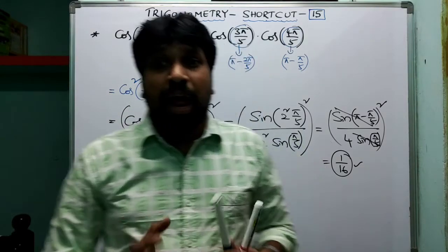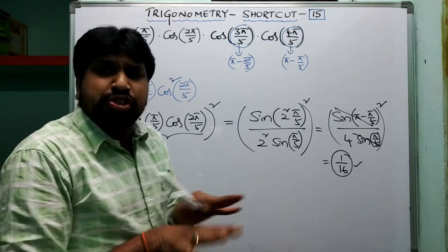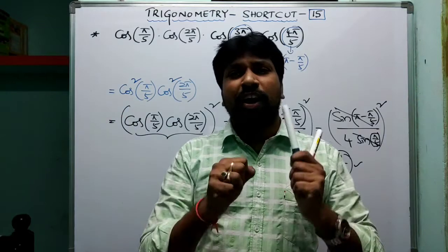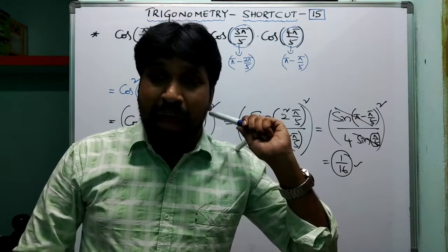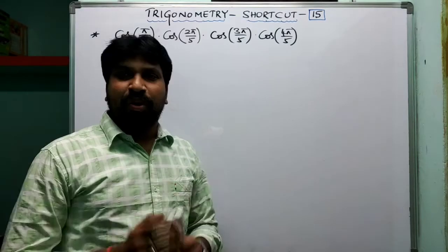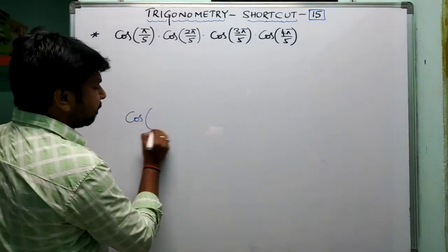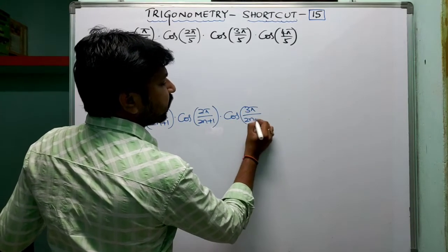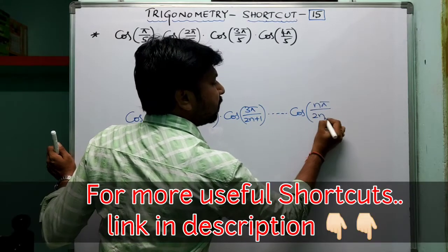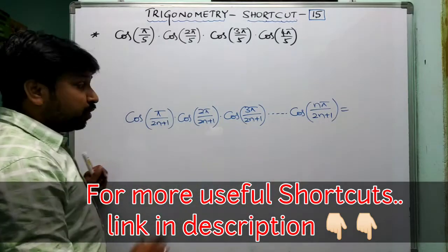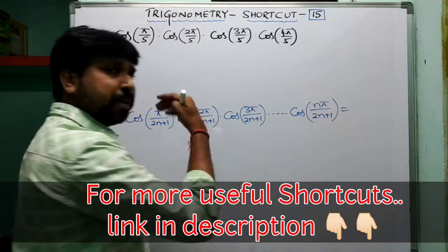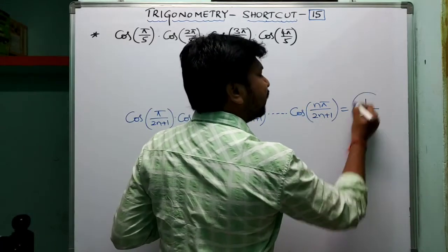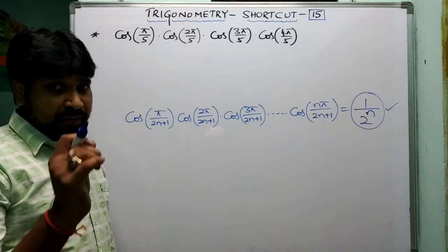Without using any shortcuts you can evaluate this question in a fraction of seconds — hardly two or three seconds. Now let me introduce the superb shortcut. The general formula is: cos(π/(2n+1)) · cos(2π/(2n+1)) · cos(3π/(2n+1)) · ... · cos(nπ/(2n+1)), where all denominators are the same and the numerators go 1, 2, 3, ... n consecutively. The formula equals 1/2^n, where n is the total number of terms.